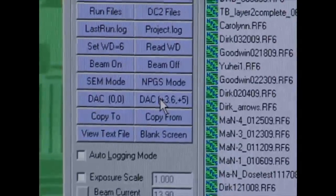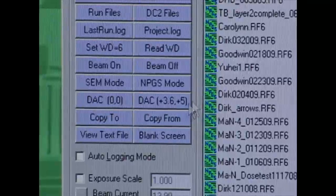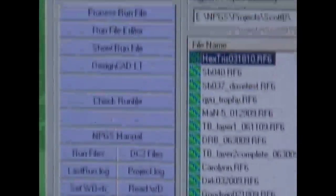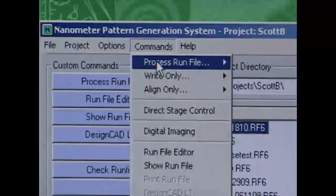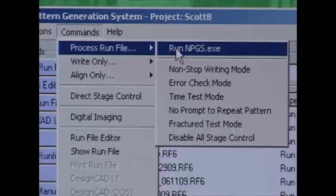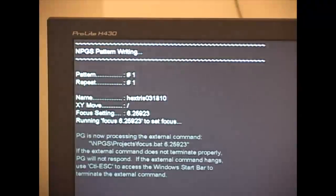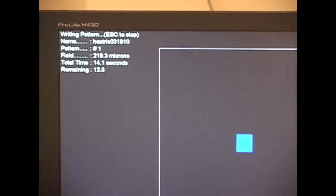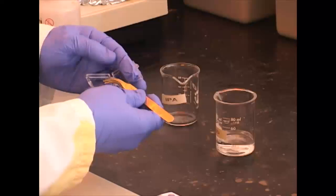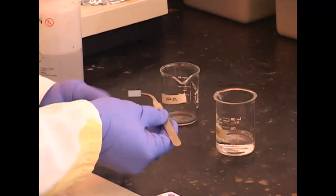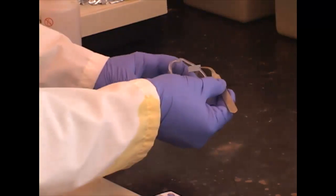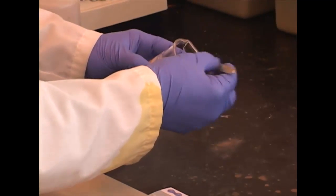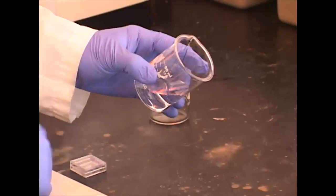After the DAC calibration, our system needs a small adjustment of 3.6 and 5. And then I can process the run file. After we've finished processing the run file, you can remove the chip from the chamber, and take it over to the wet chemistry room for developing.